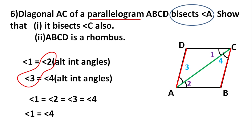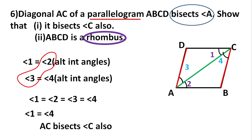Now we need to prove the second part. The figure is a parallelogram and we need to prove it is a rhombus. The difference: a parallelogram has all opposite sides equal and parallel, while a rhombus has all sides equal. So we need to prove all sides are equal. For that, we need to prove that adjacent sides are equal — just one pair is required.